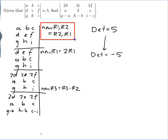And then what we've done is we've multiplied row 1 by 2. And multiplying a row by a number multiplies the determinant by 2. So the determinant of this matrix is minus 10.